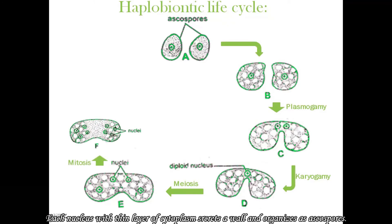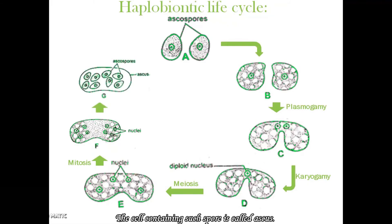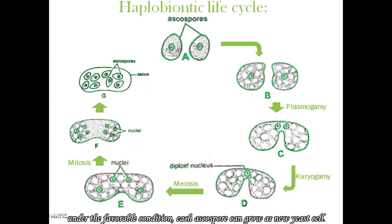Each nucleus with a thin layer of cytoplasm secretes a wall and organizes as ascospores. The cell containing such spores is called an ascus. Ascospores become free after the breakage of the ascus wall, and under favorable conditions, each ascospore can grow as a new yeast cell.